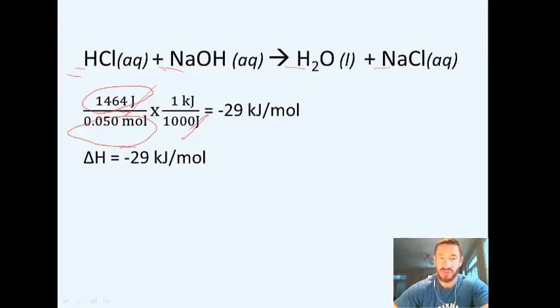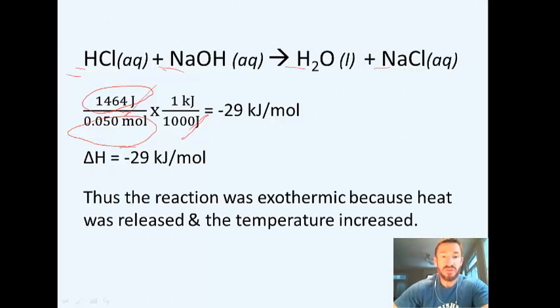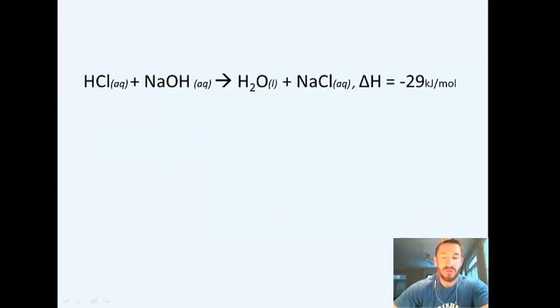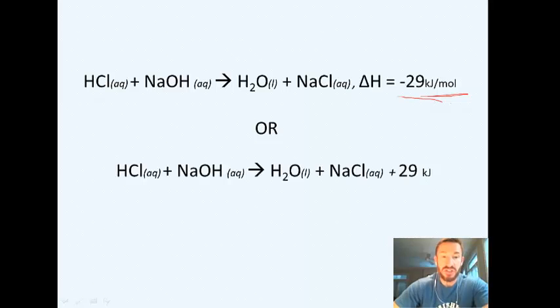Now, how do you express this? There's really two different ways to write this. This reaction was exothermic because heat was released and the temperature increased. So this is the first way: you can just write the reaction, and somewhere say that delta H is equal to negative 29 kilojoules per mole. So this is the first way.